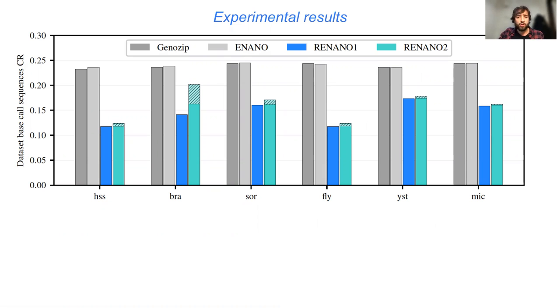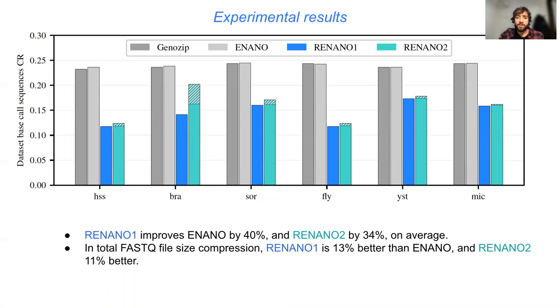The results show that ReNano1 improves the base call sequences compression of eNano by almost 40% on average, while ReNano2 improves it by almost 34% over all the datasets. As for FASTQ compression, the average improvements are 13% and 11% respectively.